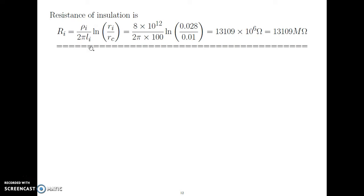Substituting the value of ρi, length as 100 meter, outer radius Ri as 0.028 meter, and conductor radius Rc as 0.01 meter, we get the insulation resistance as 13109 into 10 raised to 6 ohm — that is 13109 mega ohm.